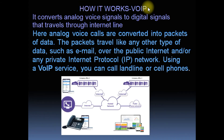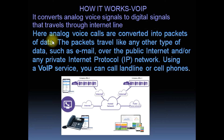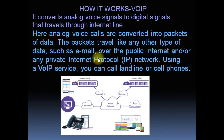How does VoIP work? VoIP converts analog voice signals into digital signals that travel through the internet line. Analog voice calls are converted into packets of data, which travel like any other type of data, such as email.